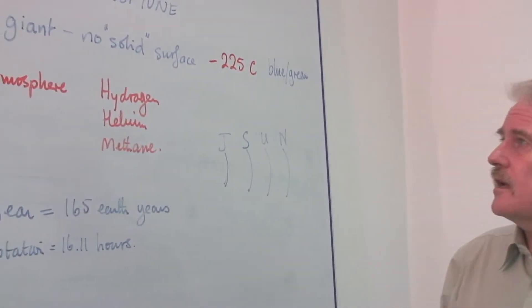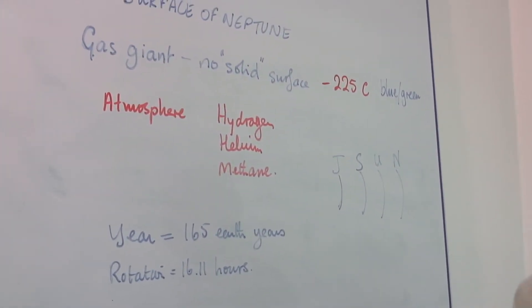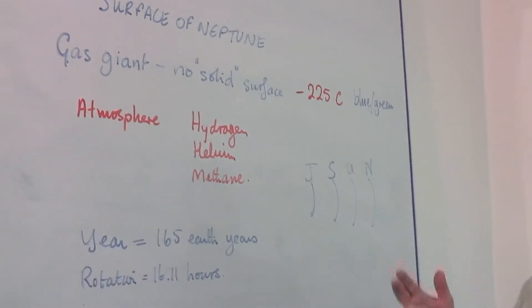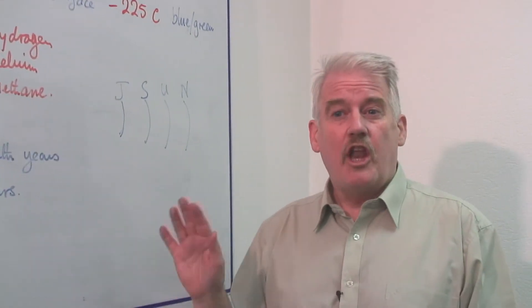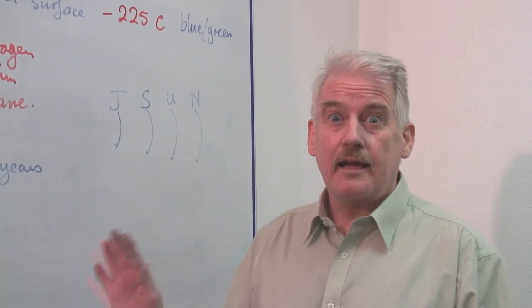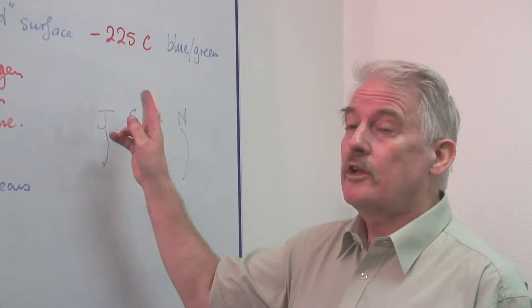It is a gas giant. It doesn't have a solid surface. And the surface temperature is minus 225 Celsius. Now if you compare that to Earth, the lowest temperature ever recorded on Earth is around minus 90. So it's a bit cooler than that.